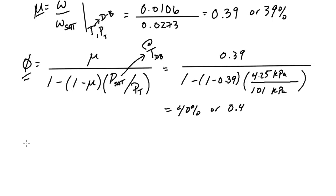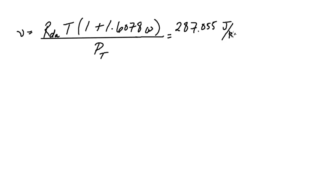Moving on to nu, the specific volume. In a previous video, we found a formula for that. So let me write that down. That is the gas constant for dry air times temperature times 1 plus 1.6078 times omega, and that's divided by the total pressure that we have. The specific gas constant for dry air is 287.055 joules per kilogram Kelvin.